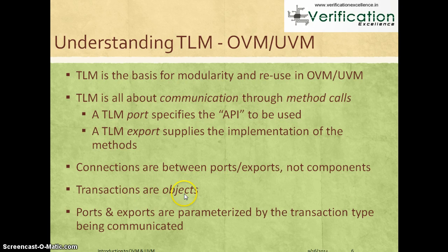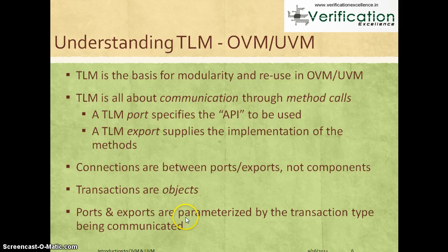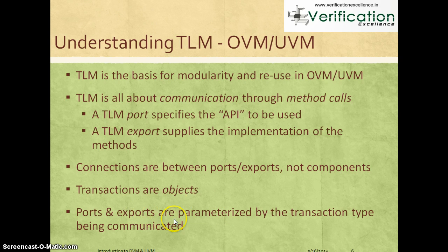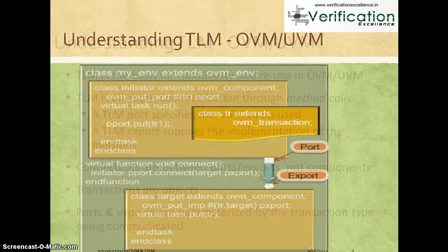Transactions are class objects — a way to abstract all the information. Ports and exports in OVM and UVM are parameterized by the transaction type to be communicated. This means the port and export definitions are not tied to a specific transaction type. Based on what kind of transactions you're communicating over a channel, the corresponding port and export can be parameterized, allowing the same port and export to be used to communicate different kinds of transactions.